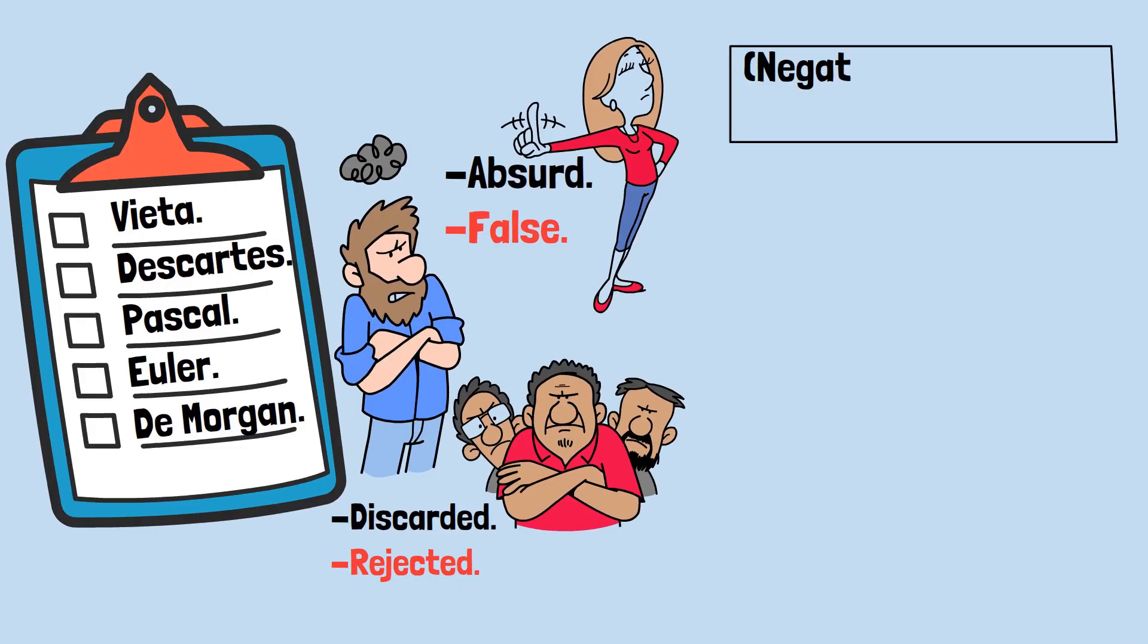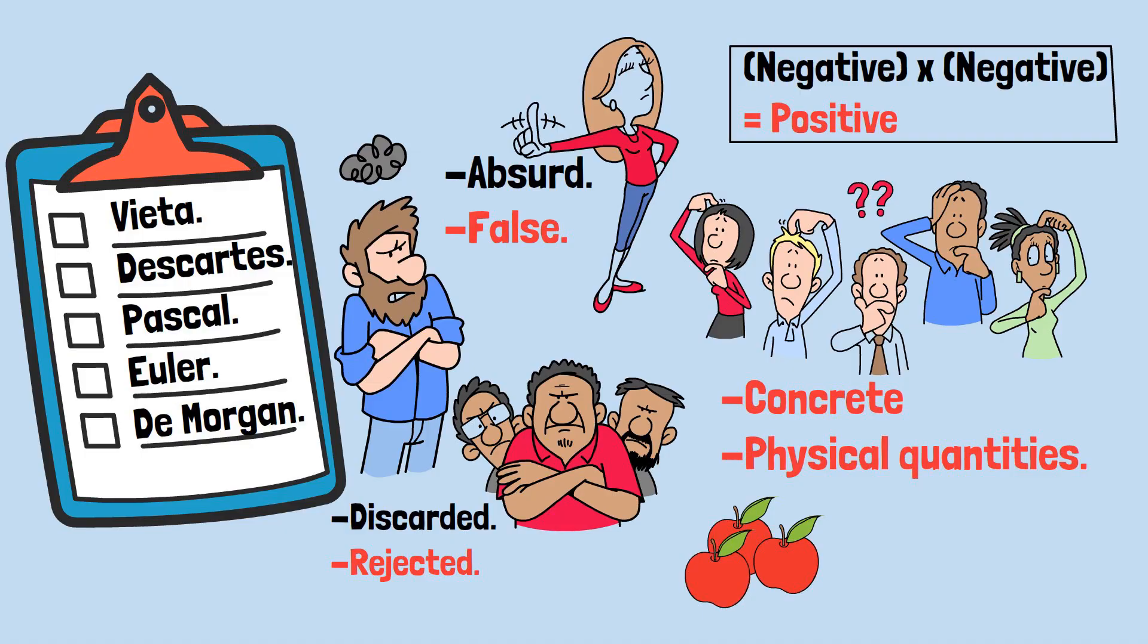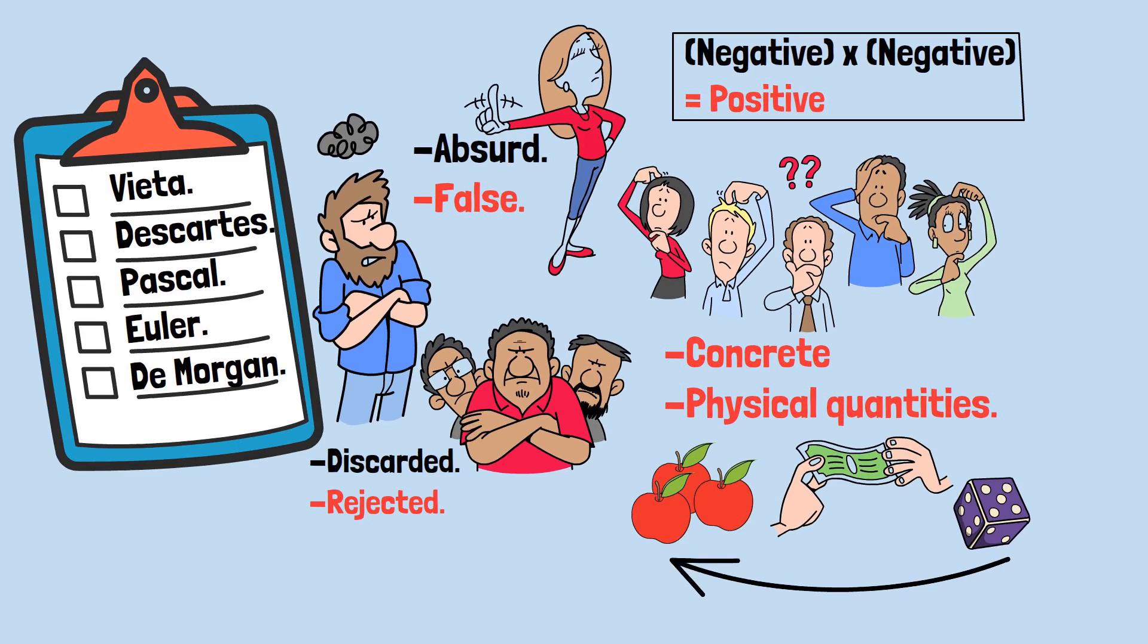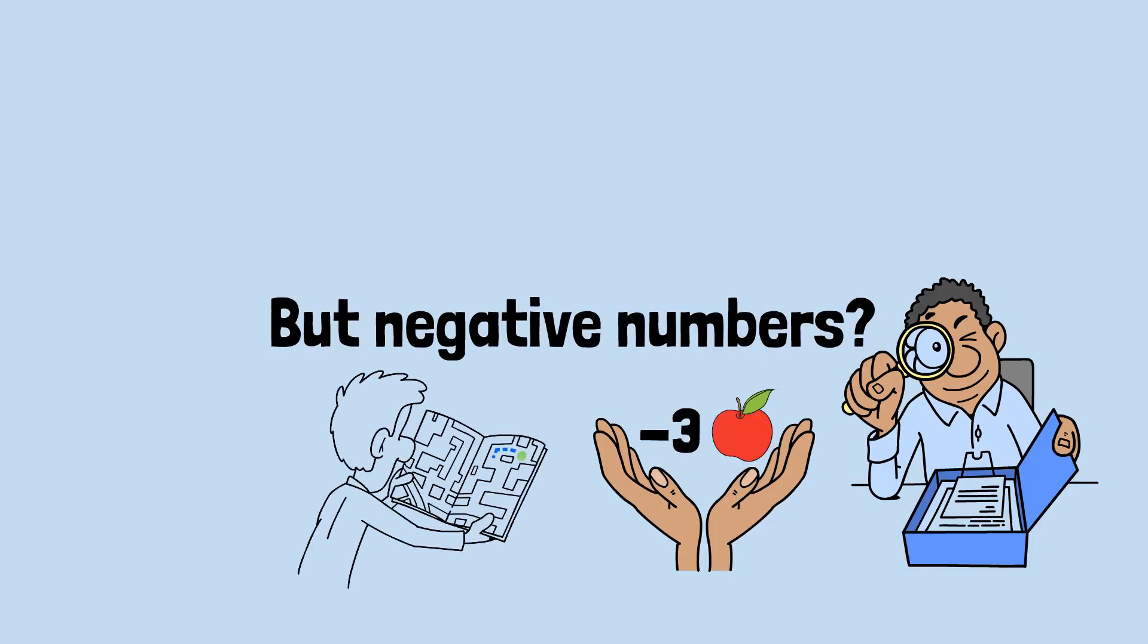Before we dive into why negative times negative equals positive, let's acknowledge why this feels so wrong in the first place. Our brains evolved to understand concrete, physical quantities. We can easily grasp the concept of having three apples, or losing two dollars, or gaining five points in a game. These are tangible, real-world experiences that map directly onto positive numbers and simple subtraction. But negative numbers? They're abstract constructions that don't correspond to anything we can physically touch or see. You can't hold negative three apples in your hand. There's no such thing as negative distance in the way we experience the world daily.